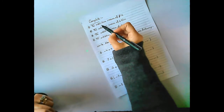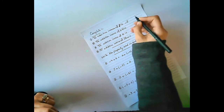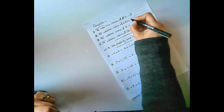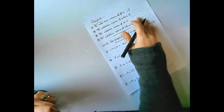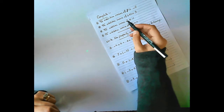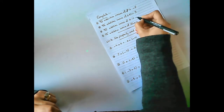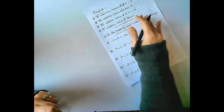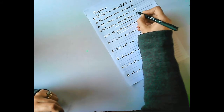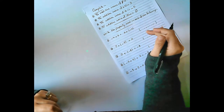Complete: The additive inverse of 7 is negative 7. The additive inverse of negative 3 is 3. The additive inverse of 5 is negative 5. The additive inverse of 0 is 0. Why? Because 0 is neither positive nor negative.